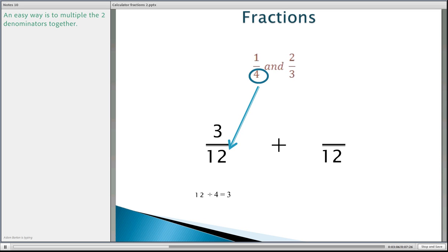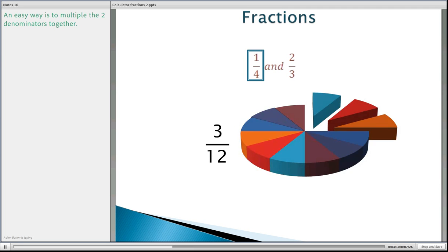So one quarter also equals three twelfths. So we're now looking at this part here, that one quarter which is three twelfths, which is actually three parts of those twelve pieces. One, two and three pieces.